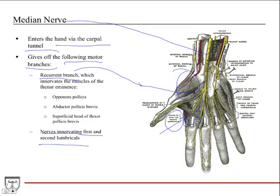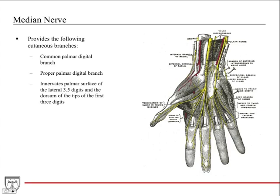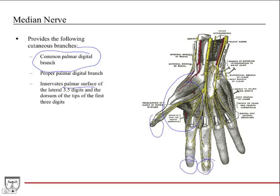Important high-yield fact: the first and second lumbricals, those of the index and middle fingers, are innervated by the median nerve. The third and fourth lumbricals, those of the ring finger and pinky, are innervated by the deep branch of the ulnar nerve. The median nerve also provides cutaneous branches — the common palmar digital and proper palmar digital branches — innervating the palmar surface of the lateral three and a half digits and the dorsum of the tips of the first three digits. The ring finger is split: the radial half is median nerve, the ulnar half is ulnar nerve.